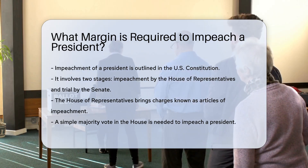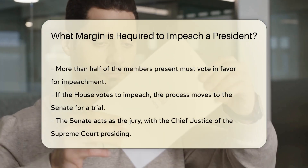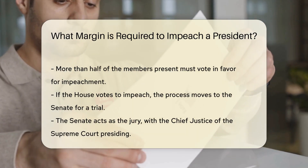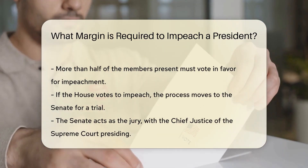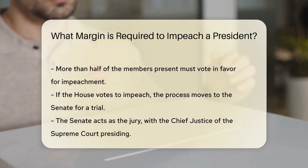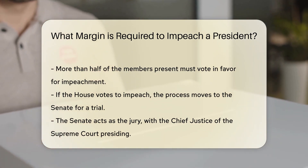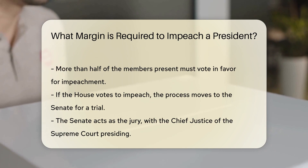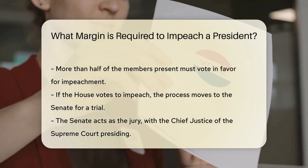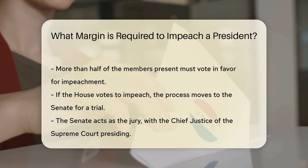For the House to impeach a president, a simple majority vote is needed. This means more than half of the members present must vote in favor. If the House votes to impeach, the process moves to the Senate for a trial. The Senate then acts as the jury, with the Chief Justice of the Supreme Court presiding over the trial.